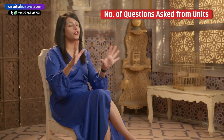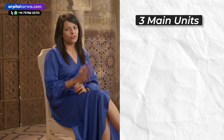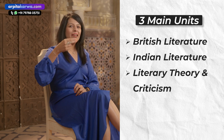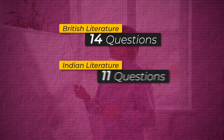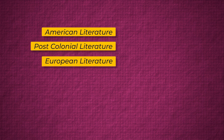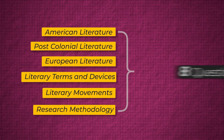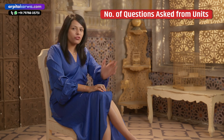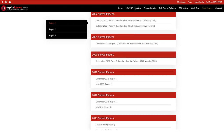Let's quickly talk about the number of questions asked from each unit. The three main units from which most questions come are British Literature, Indian Literature, and Literary Theory — with Literary Criticism also featuring, but less so. From British Literature, 14 to 15 questions are asked every year. From Indian Literature, 10 to 11 questions are asked, and 5 to 6 questions are asked from Literary Theory. From all other units — American, Post-colonial, European, Literary Terms and Devices, Movements, and Research Methodology — you will get around 8 to 9 questions combined. But don't shorten those units, as even one mark can affect your cutoff. Visit our website to download past year papers of GATE English free of cost and start your preparation.